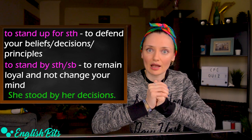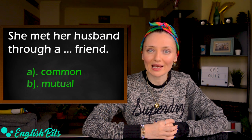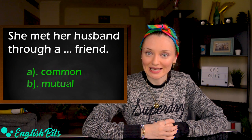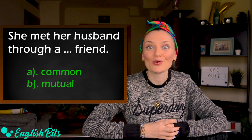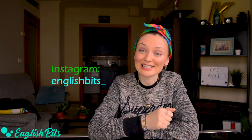I've got a bonus sentence: She met her husband through — A) common, or B) mutual — friend. Choose A or B, and I'm going to give you the correct answer in our next English vid. That's it for today — I really hope you enjoyed this quiz and learned something new. Please share your score with me in the comments below. I also have another quiz on common mistakes if you haven't seen it yet. Don't forget to like this lesson and subscribe to my channel. Thanks for watching and see you next week!